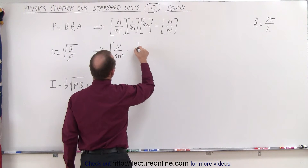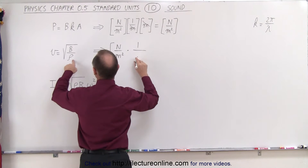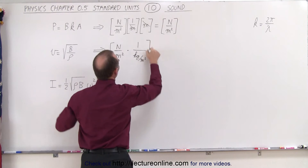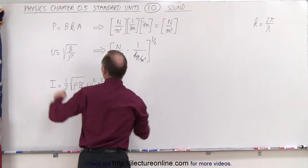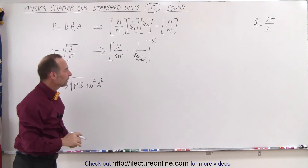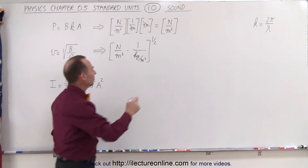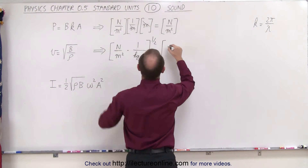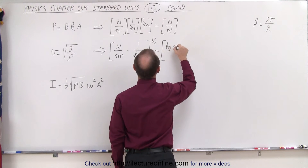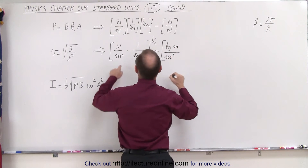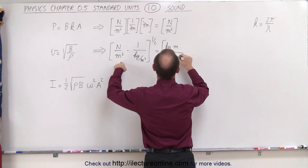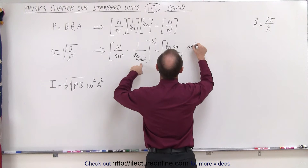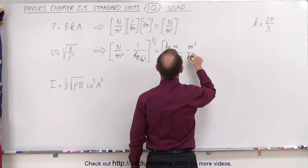The density is kilograms per cubic meter, so 1 over density gives meters cubed over kilograms. We take the square root of the whole thing. Newtons can be written as kilograms·meters per second squared, and we have over meters squared. So in the numerator we get meters cubed, and kilograms in the denominator.